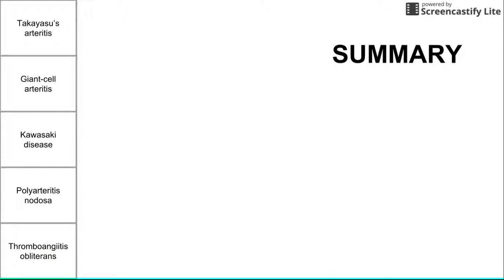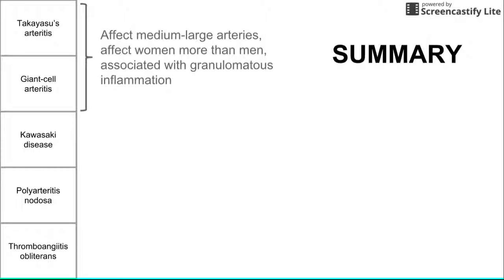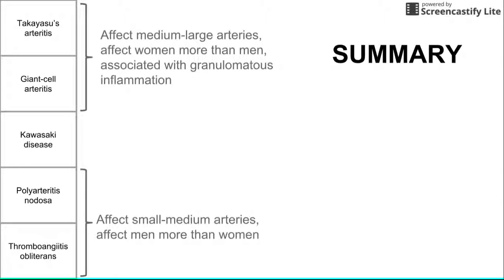As a quick summary: the first two diseases — Takayasu's and giant cell arteritis — affect medium to large arteries, affect women more than men, and are both associated with granulomatous inflammation. The last two — polyarteritis nodosa and Buerger's disease — affect men more than women and affect small to medium arteries. Kawasaki disease is the one that affects children of both genders fairly equally.